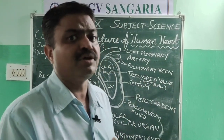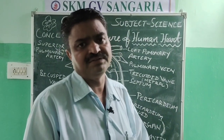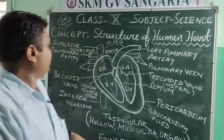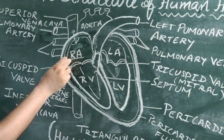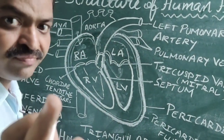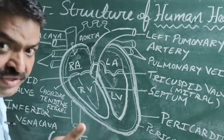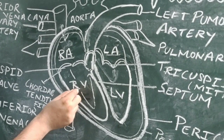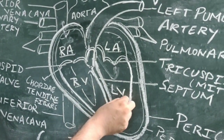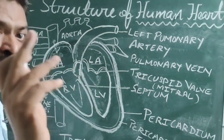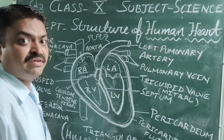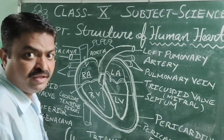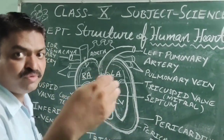If we speak about its internal structure, then it is complicated. It has four chambers: right atrium (RA), left atrium (LA), and the corresponding ventricles. With the help of four chambers, we can get oxygenated blood in a proper amount, and that oxygenated blood helps us to get more and more energy.